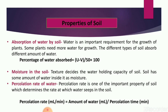Next is moisture in the soil. Moisture means the amount of water present in the soil. Texture — that is, the size of particles — decides the water holding capacity of the soil. Sandy soil has very less water holding capacity while clay soil has very good water holding capacity, but it is not so good for crops. Loamy soil has the right water holding capacity and is best for crops.